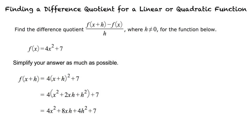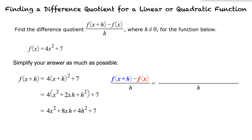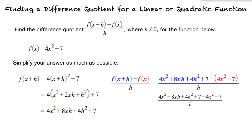What do we do next? We solved for f of x plus h, and we were given f of x. Now that we have all parts of the difference quotient, we can substitute them into the equation and simplify the fraction. We begin by substituting in for f of x plus h with the result, and f of x with what we were given. We can then distribute the negative sign in our numerator and combine our like terms with addition and subtraction.